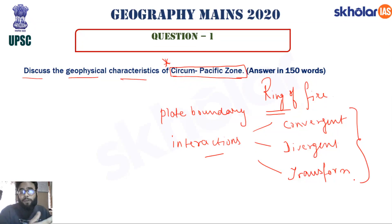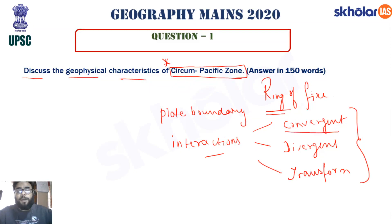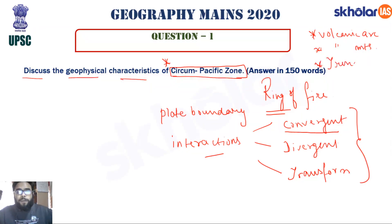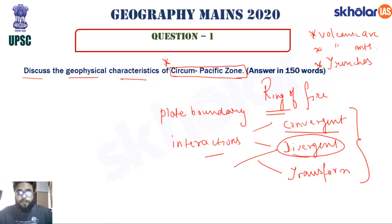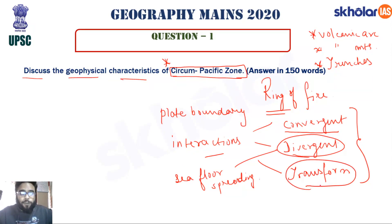Along with mentioning the areas where boundary interactions occur, we also need to discuss the associated features. At convergent boundaries, we see volcanic arcs, volcanic mountains, and trenches. At divergent boundaries, we see sea floor spreading. At transform boundaries — where two plates slide past each other — we see high-intensity earthquakes where a lot of stress is released.